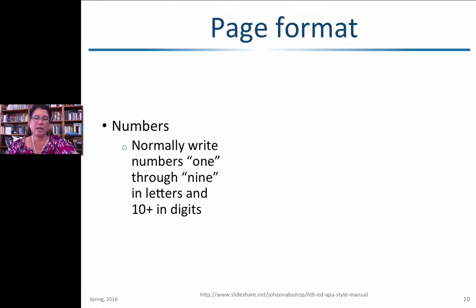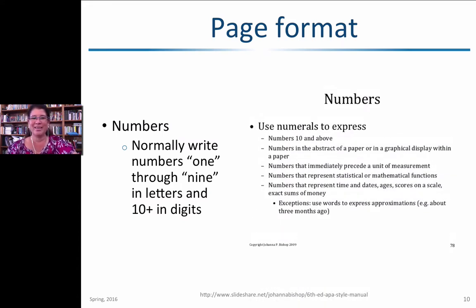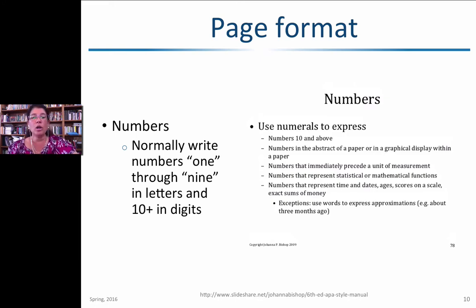Regarding numbers, APA has specific rules. You write numbers one through nine in words, and from 10 onward in digits. You can use Arabic numerals for specific measurements like four centimeters, or when numbers represent time, dates, ages, and scores on a scale. However, approximations — like 'about three months ago' — are written out in words.